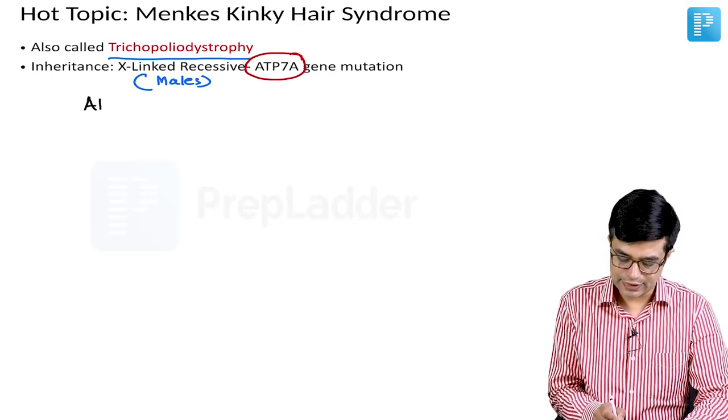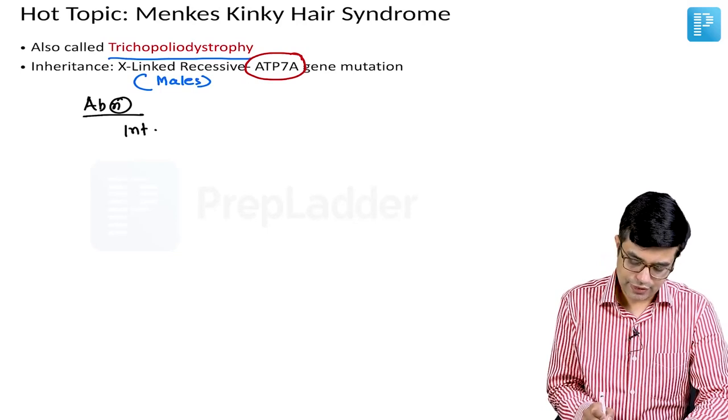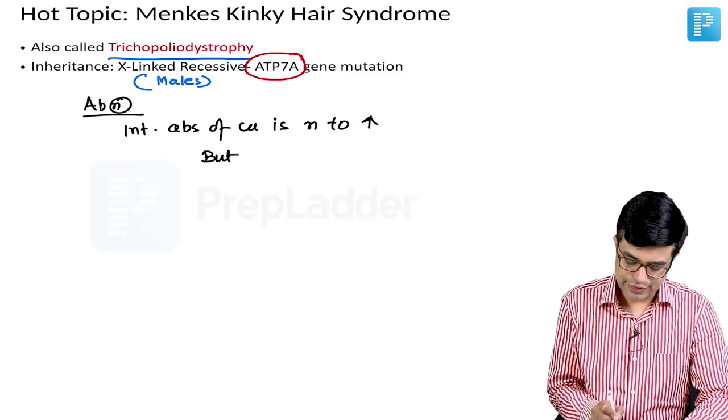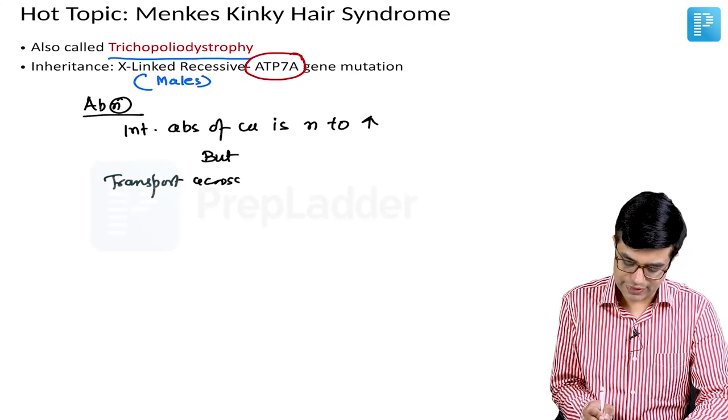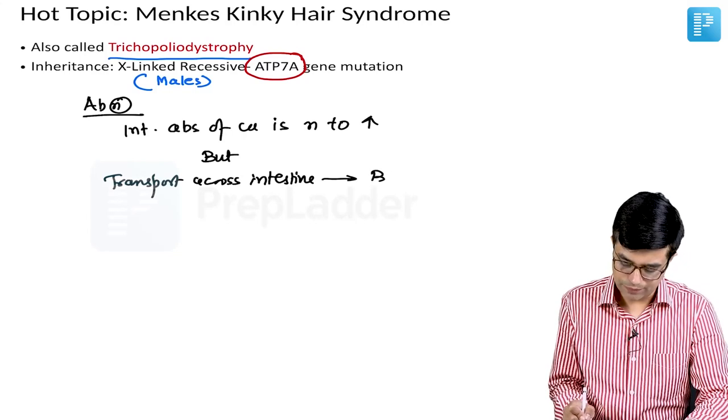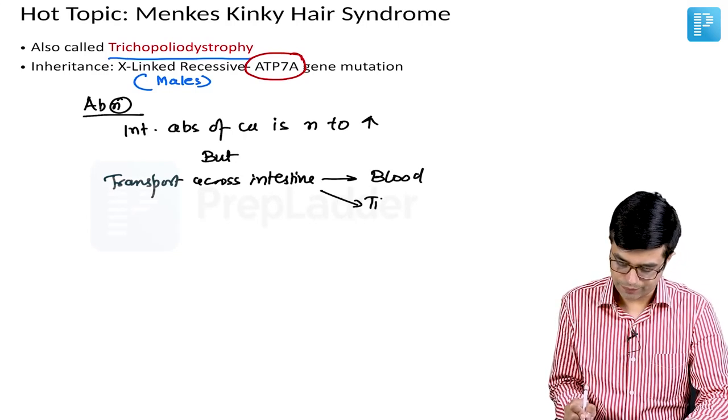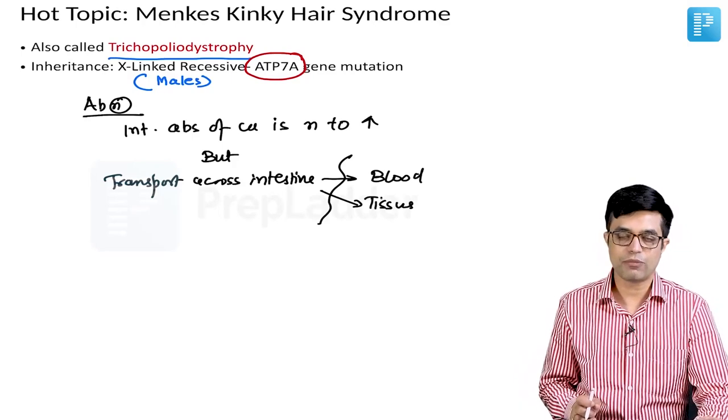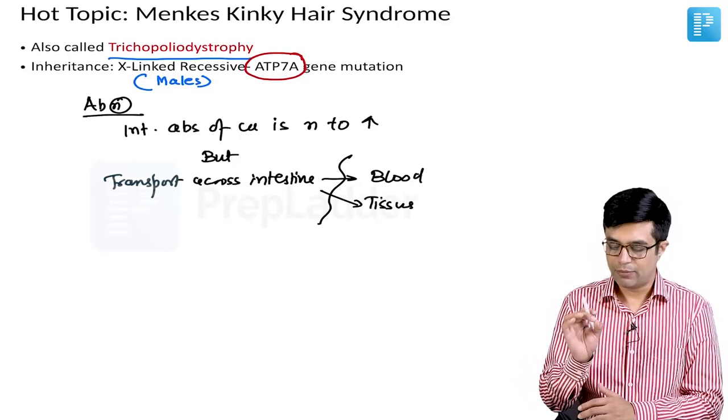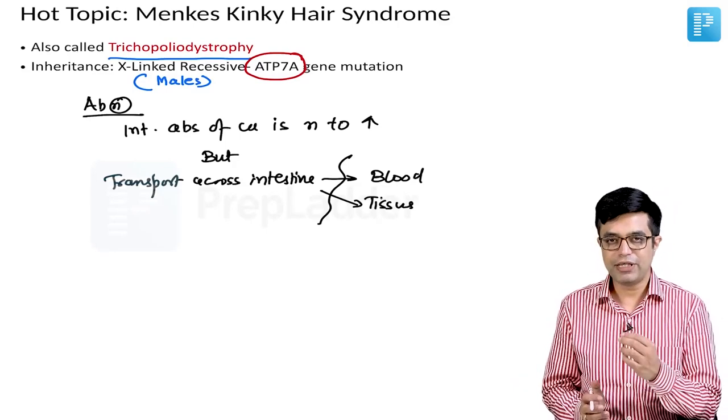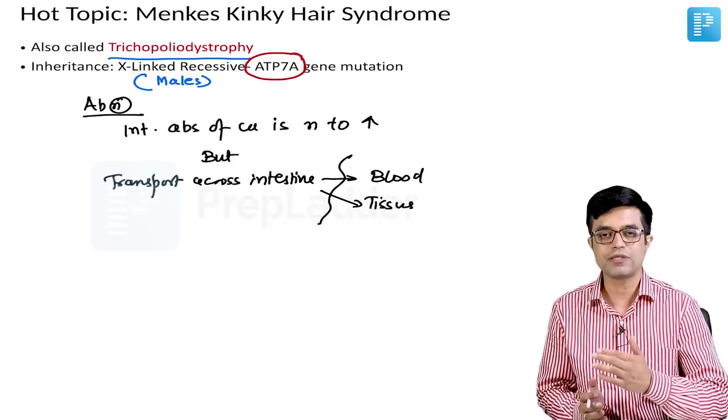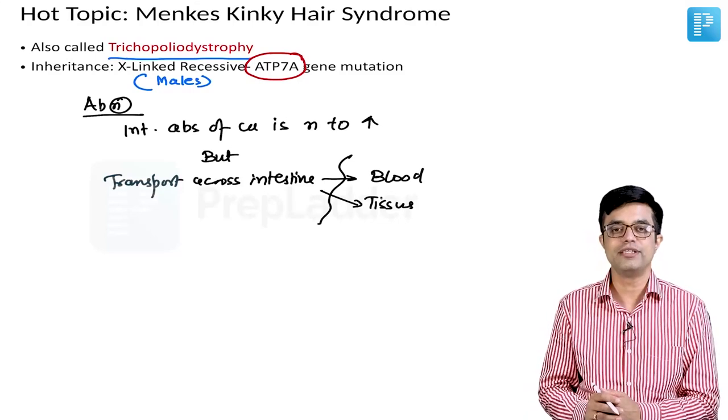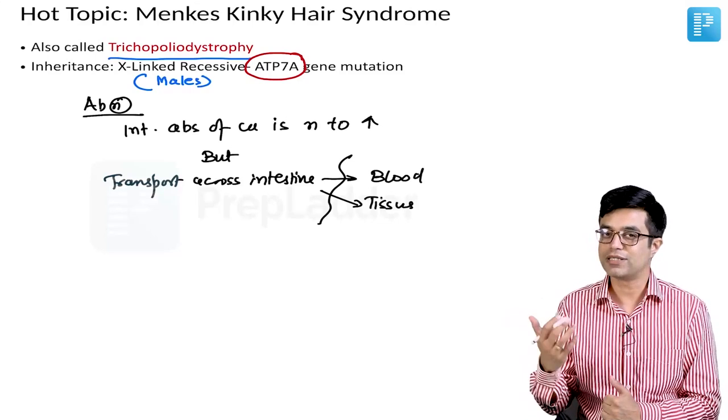What is the abnormality seen in these individuals? In these patients the intestinal absorption of copper is normal to increased, but its transport across the intestine into blood as well as tissues is faulty because this specific carrier protein is involved. Because of abnormalities of this ATPase-dependent protein you have Menkes Kinky Hair Syndrome developing. There will be severely low levels of copper, low ceruloplasmin levels despite the absorption being more than adequate, and that is why oral copper supplementation is not of much use. You need to give parenteral copper supplementation.